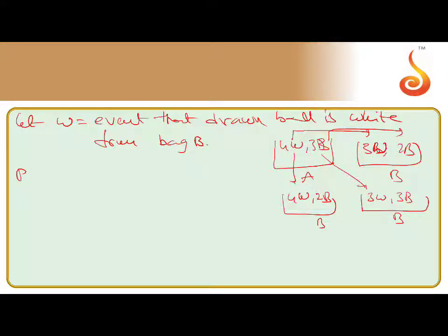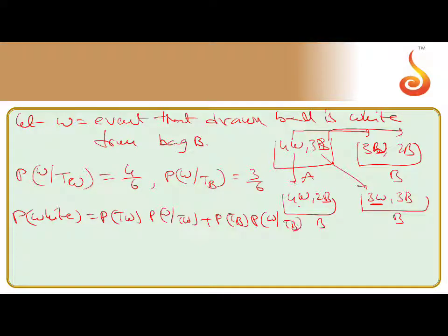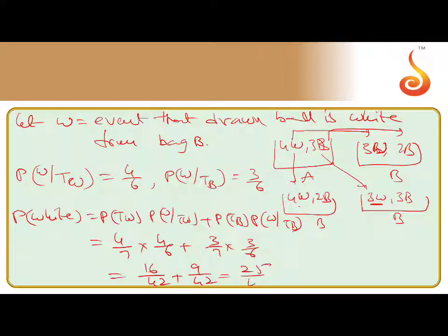The probability that the drawn ball is white from Bag B: P(W) = P(TWB) × P(W|TWB) + P(TBB) × P(W|TBB). That is (4/7) × (4/6) + (3/7) × (3/6) = 16/42 + 9/42 = 25/42. This is the required probability.